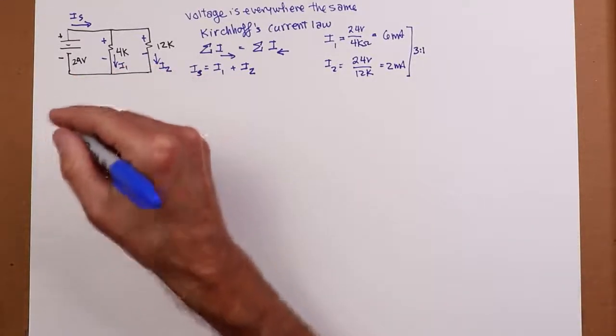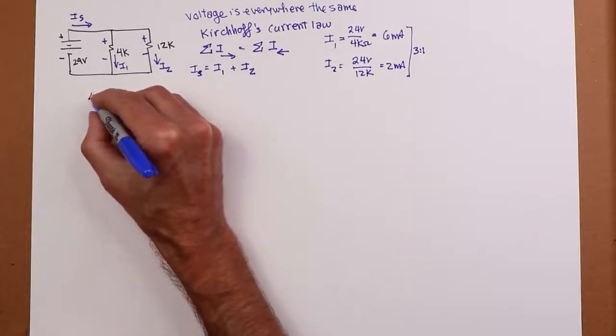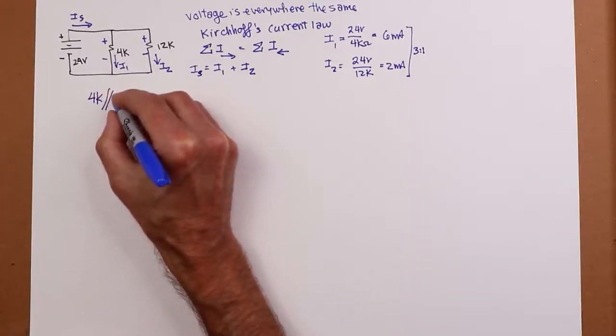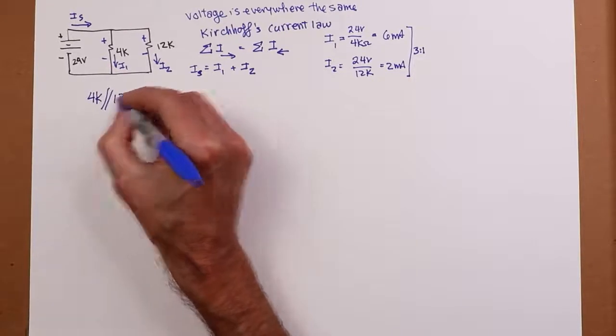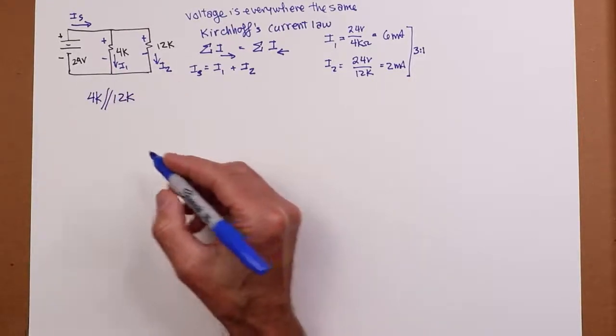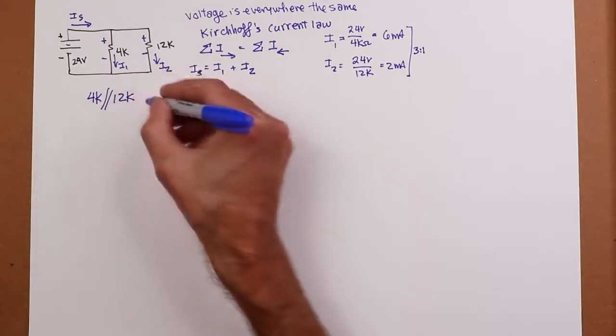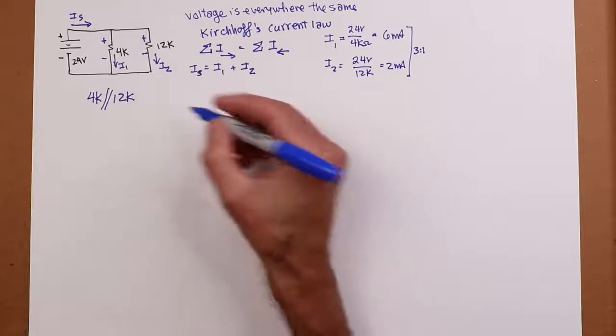What is the effective resistance of this thing? In other words, what is 4k in parallel with 12k? Well, these are actually the numbers we used last time around. If we use product sum rule, 4k times 12k is 48 meg. Sum 16k, that's going to work out to 3k.